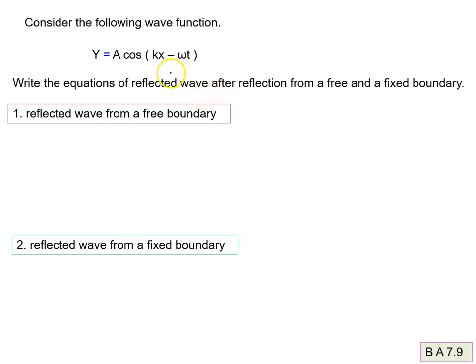Consider the following wave function: Y = A cos(kx - ωt). This is the equation of a wave traveling in the plus x direction, because kx has a positive sign and ωt has a negative sign.